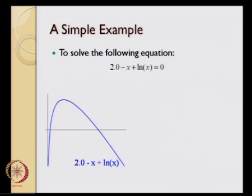This is a straightforward example of a non-linear equation: 2 minus x plus log of x equal to 0. Essentially, what we are intending to do is find the points of intersection of this particular curve with the x-axis. This particular curve intersects the x-axis at two different locations, which are the solutions to the equation 2 minus x plus ln of x equal to 0.